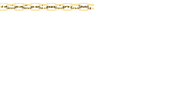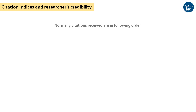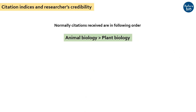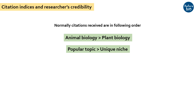But how important are citation indices in judging a researcher's credibility? Well, it all depends upon who is evaluating. A plant biologist may receive lesser citations compared to an animal or human biologist. It also depends upon the topic you are working on. If you are working on a topic that is more popular worldwide, there will obviously be more readers referring and citing your work. But for a highly specific research niche, you cannot expect high citations.